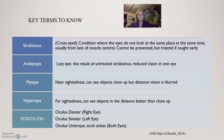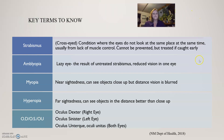Some key terms to know. Strabismus, or cross-eyed, is the condition where the eyes do not look at the same place at the same time, usually from a lack of muscle control. It cannot be prevented but can be treated if caught early. Amblyopia, or lazy eye, is the result of untreated strabismus and results in reduced vision in one eye.